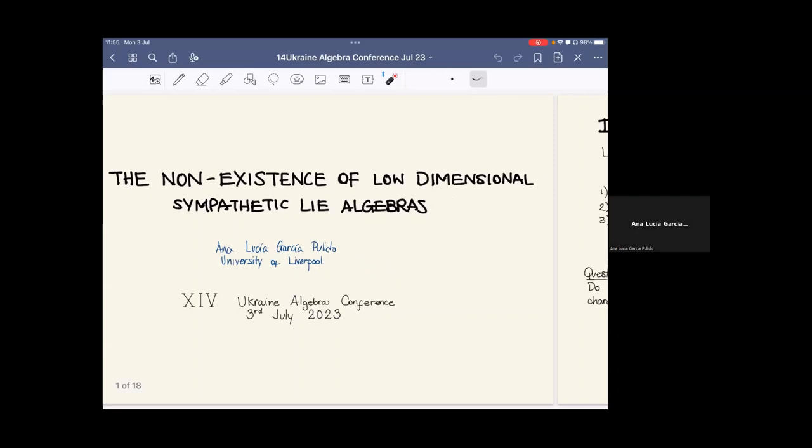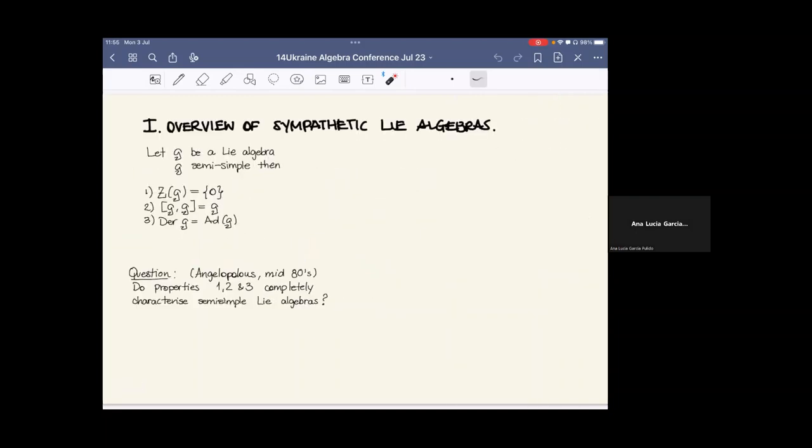I'll start with an overview of sympathetic Lie algebras. Let G be a Lie algebra which is finite dimensional. Recall that if G is semi-simple, then G has three properties: its center is zero, G is perfect so the first derivative ideal is equal to G, and the derivations, the ones that come from the bracket or the inner derivations, are equal to the whole space of derivations. Basically it has got no outer derivations.